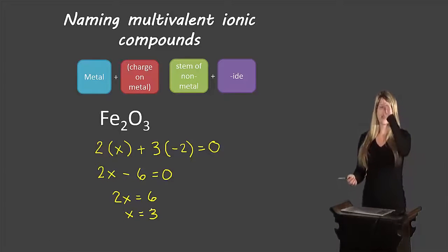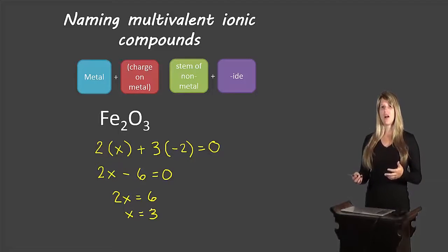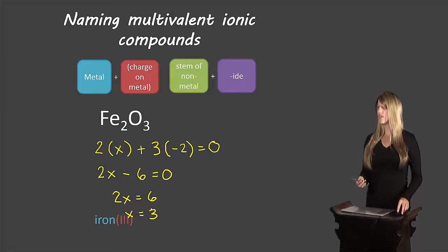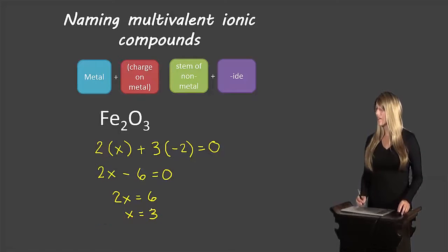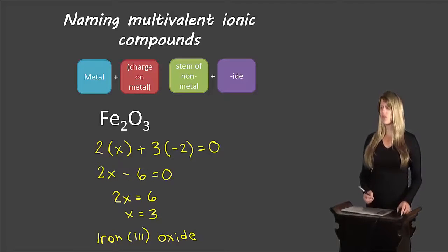Now I can finish naming. Iron 3 — written in brackets — and then oxygen has the stem 'ox', so I add the ending -ide. The name of Fe₂O₃ is iron(III) oxide.